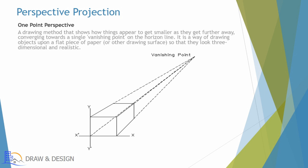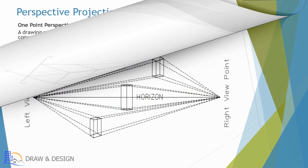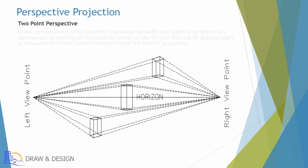One point perspective is a way of drawing objects upon a flat piece of paper or other drawing surface so that they look three-dimensional and realistic. Two point perspective: a drawing method in which parallel lines along the width and depth of an object are represented as meeting at two separate points on the horizon that are 90 degrees apart, as measured from the common intersection of the lines of projection.